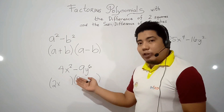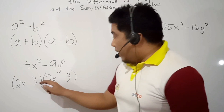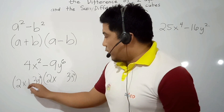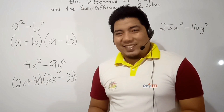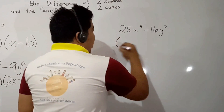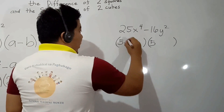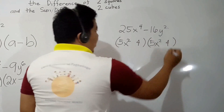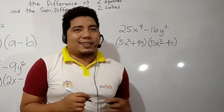Now you go to the second term, 9y to the 6. The square root of 9 is 3, and the square root of y to the power of 6 is y cubed. So the factors are (2x + 3y³)(2x − 3y³). Now let's go to the second example. We have 25x to the 4 minus 16y squared. Going to the second term, the square root of 16 is 4, and the square root of y squared is y. Then you put the signs accordingly. And that's it — it's very simple.